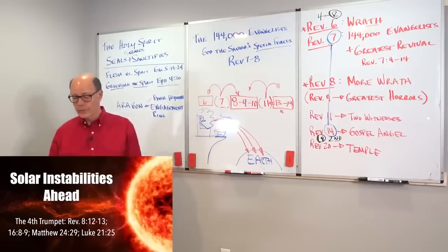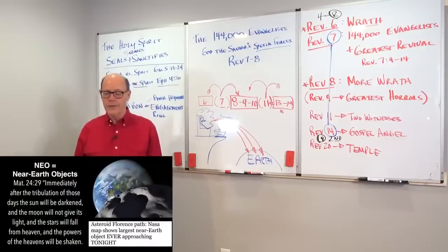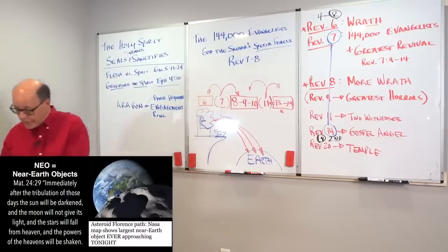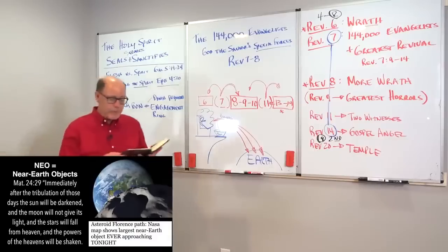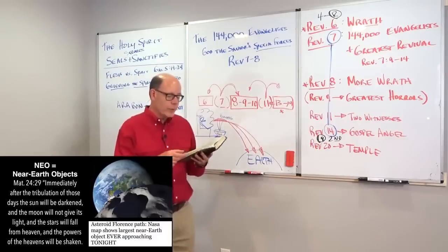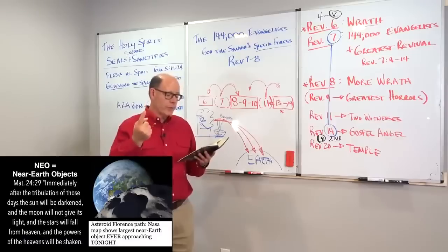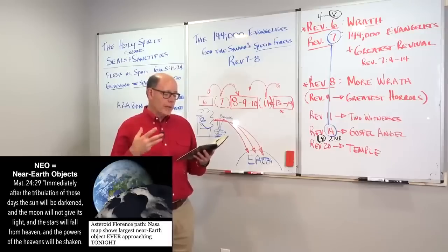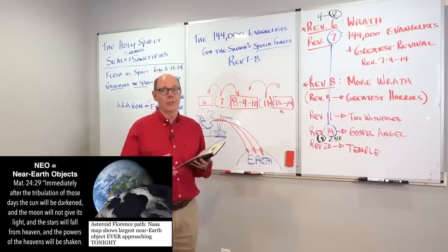So solar instabilities are ahead. But here's another thing that it says. It also says that in chapter 8, that the heavens, verse 12, were going to be struck. A third of the sun was struck, a third of the moon, a third of the stars, a third of them were darkened. And it talks about this kind of cosmic earthquake.